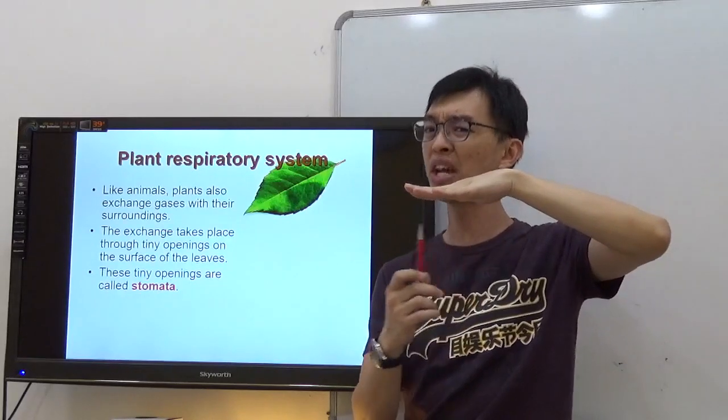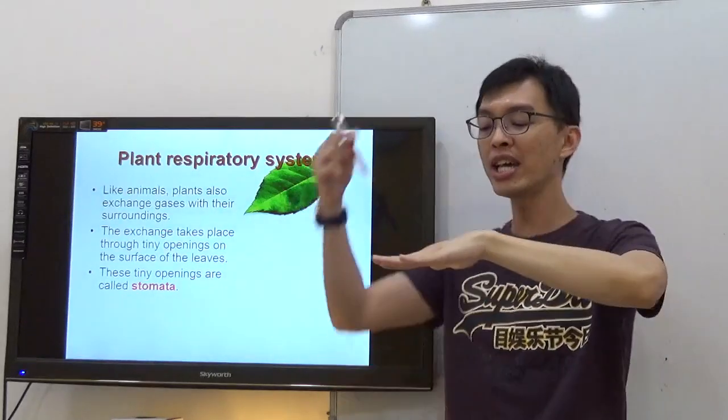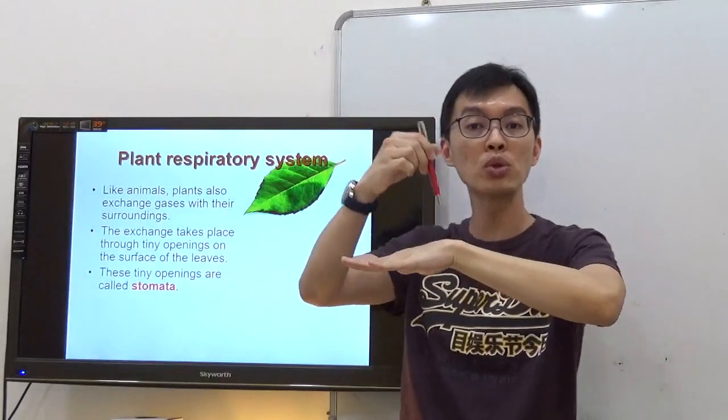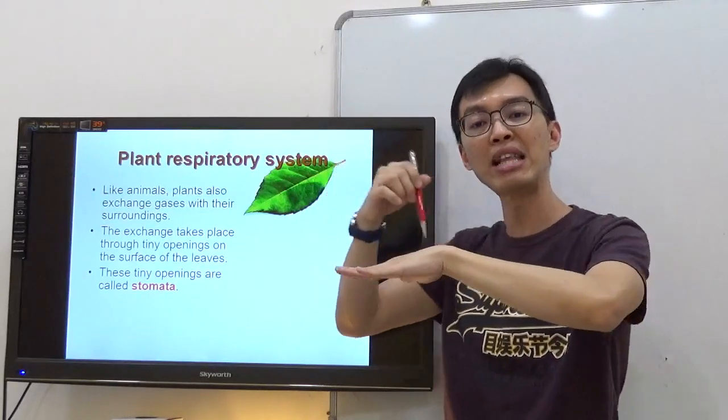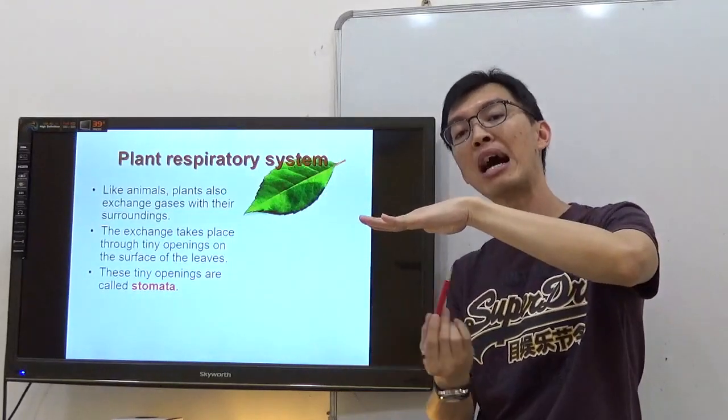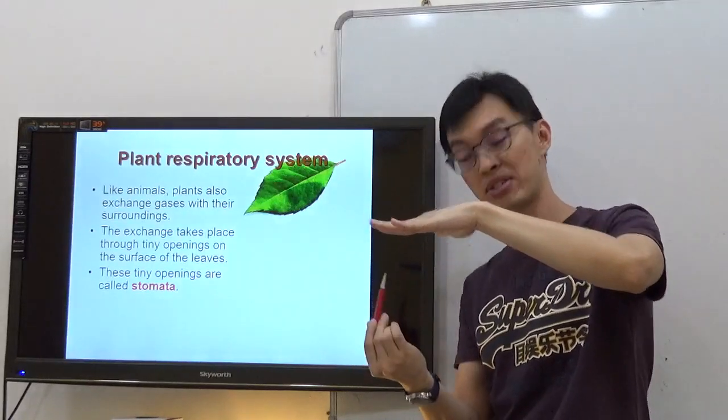Now, then you say, teacher Patrick, is it really only on the underside? No, actually, on the surface there are also stomata, but they have less stomata. Most of the stomata are found on the underside of the leaves.